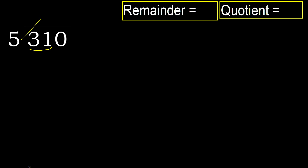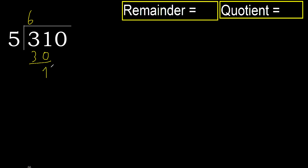5 multiplied by which number is nearest to 31 but not greater. 5 multiplied by 7 is 35, which is greater. Multiplied by 6 is 30, which is not greater. Subtract — remainder 1.